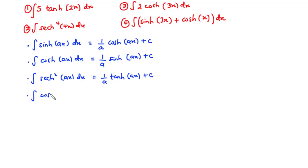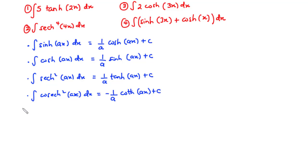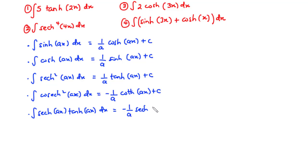The integral of csch squared ax is equal to negative 1 over a. When you integrate csch squared, you get negative 1 over a times coth ax plus c. And the integral of csch ax times coth ax dx is equal to negative 1 over a times csch ax plus c.